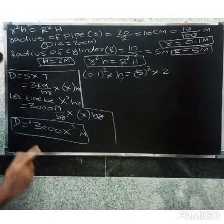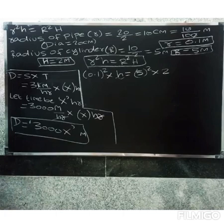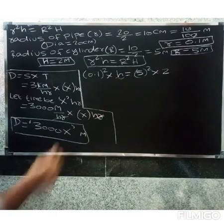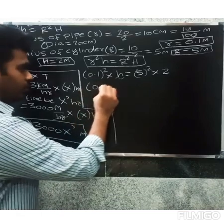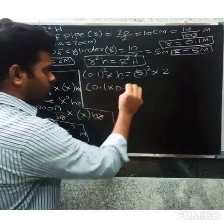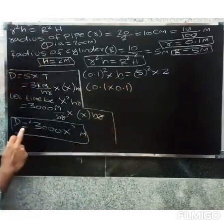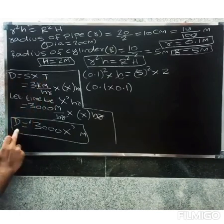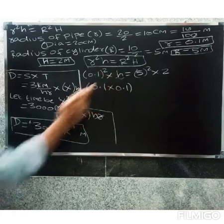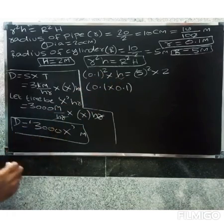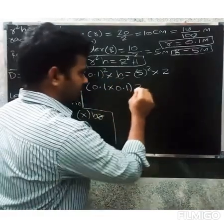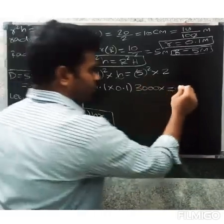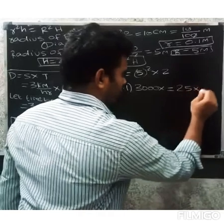So the distance, which is the height of the pipe flow, equals 3000x. Now substituting into the formula: pi r squared h equals pi R squared H, where the height of the pipe h equals 3000x.